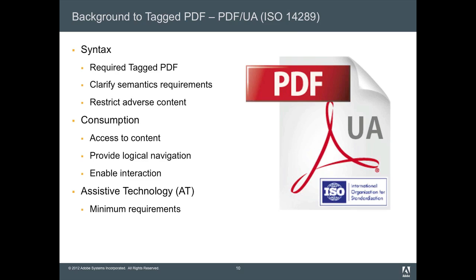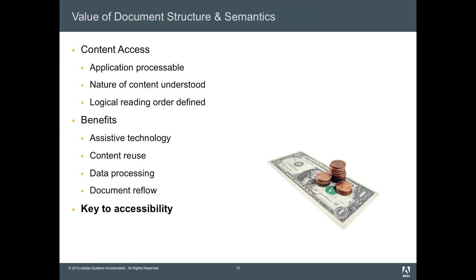The value of document structure and semantics goes far beyond just accessibility. Obviously with PDF-UA the main focus is accessibility, but for PDFs to be reprocessed or put into document management systems, good semantics and access to content are necessary to use that document as a living document. If it's not just going to a printer, for that content to be reusable in the future, you need more than just glyphs and graphic operators. If you know the nature of the content, you can navigate by it — headings, lists, tables — and you can rely on logical reading order.